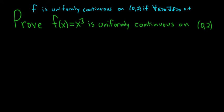such that for every x and y in our interval 0, 2, whenever x is close to y, so if we have x minus y less than delta, this should imply that f of x minus f of y is less than epsilon.